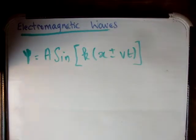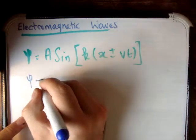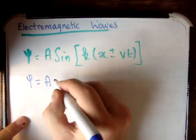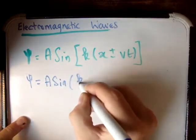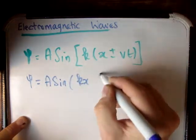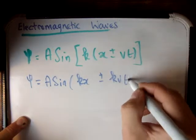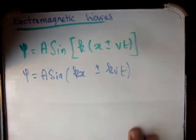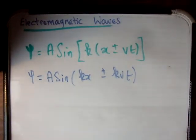So we can rewrite the equation as: psi is equal to A times the sine of (kx ± kvt). There's one more substitution I'd like to make.